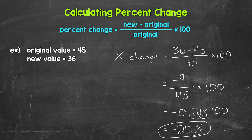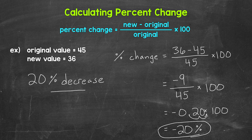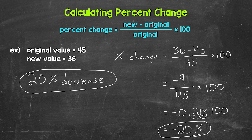That negative tells us we have a decrease — we went down 20%. So this was a 20% decrease. So there you have it — there's an example of calculating a percent change, and specifically we looked at a percent decrease. Check the description for a percent increase example.